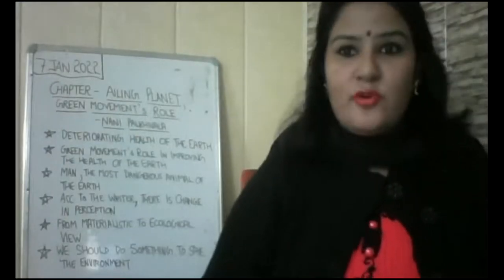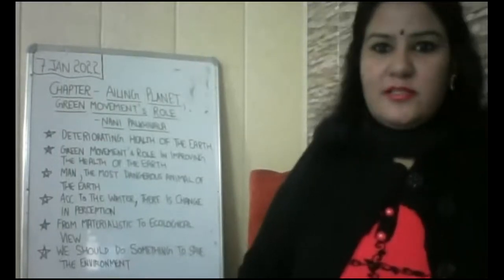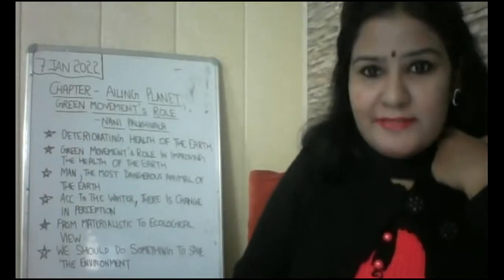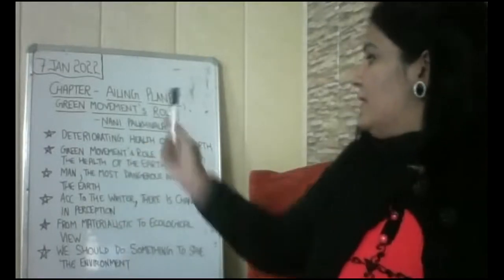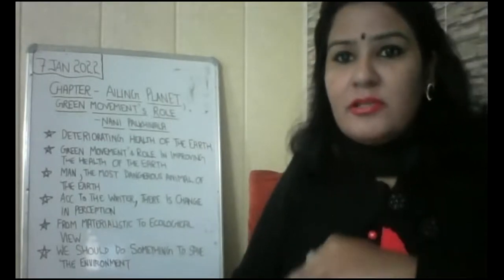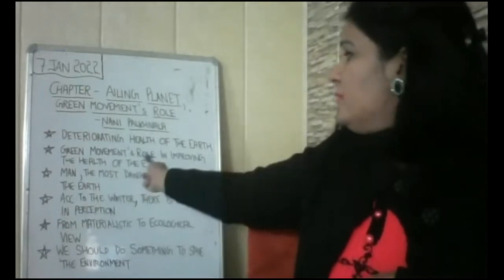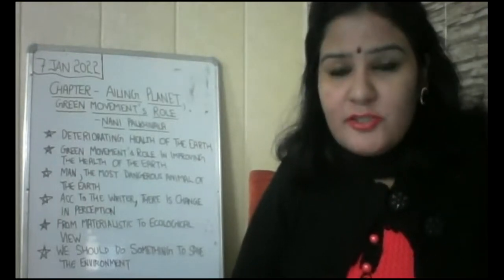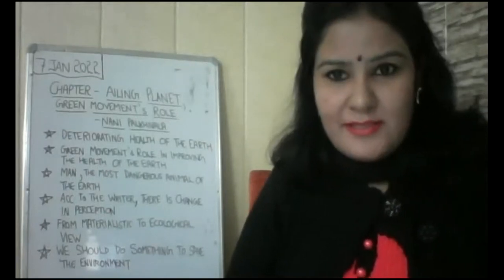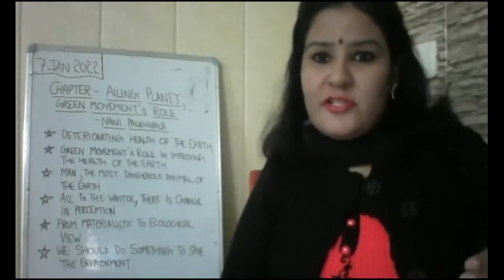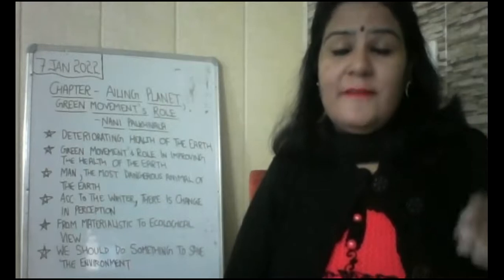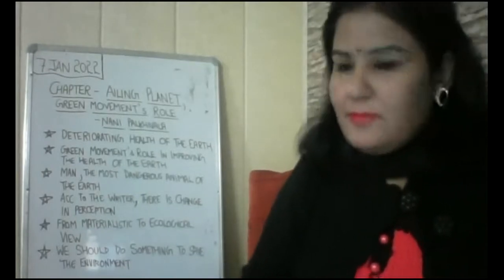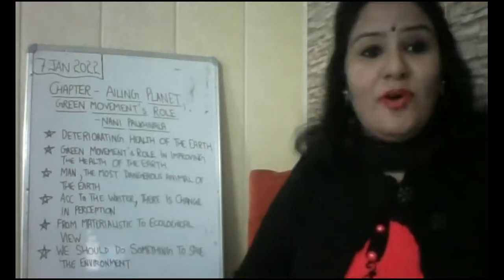Now please note down the points from the board. First and foremost is the deteriorating health of the earth — how the health of the earth is deteriorating day by day. Second, the green movement is slowly improving the health of the earth. It was initiated in New Zealand in 1972 to create awareness among the masses, moving from a materialistic view to an ecological view. Third point: man is the most dangerous animal of this earth.